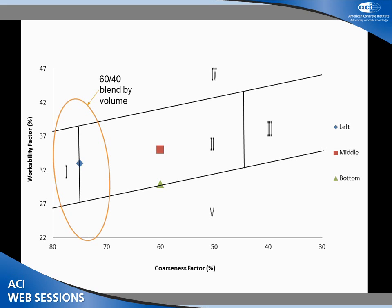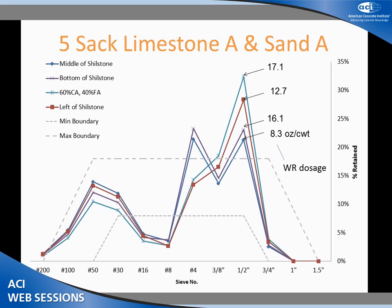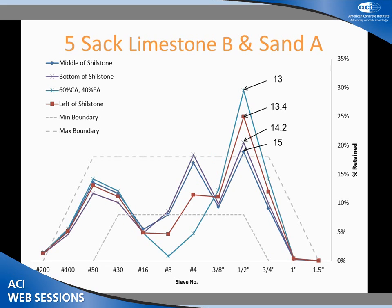We're going to start out with the Shilstone box — going to different places in it. We'll do mixes in the dead center, mixes in the bottom on the far left, and a 60-40 blend (60% coarse aggregate, 40% sand) — the traditional approach. I'm going to show this data in terms of the 818 curve. This is sand on one side, intermediate in the middle, larger aggregate on the other, and this shows how many ounces per hundred weight of water reducer it took to pass. At 17 and 8.3 — that's a lot. High dosage of water reducer is bad. We want low dosages.